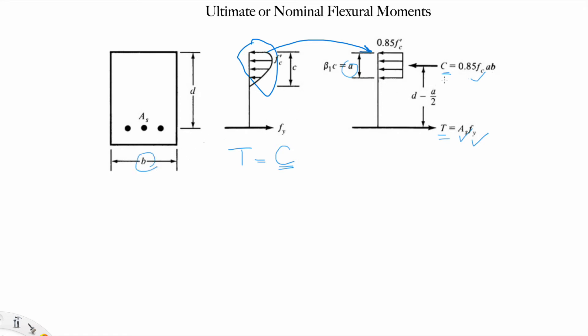It is 0.85 because it's equivalent to the non-linear. The distance between the two couples C and T is d minus a over 2. If we have couple moments from statics, we can calculate the moment and know what is the nominal flexural moment. The moment Mn is force times distance.